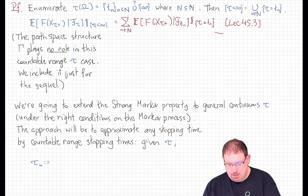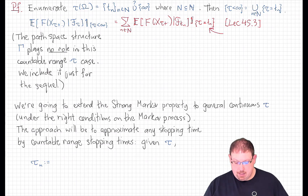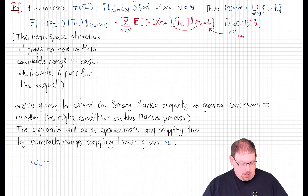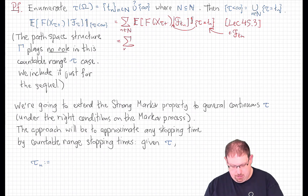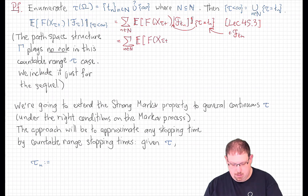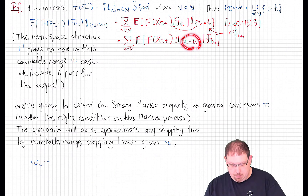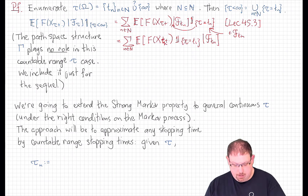Now notice that since tau is a stopping time, the event that tau equals t_n is in F_{t_n}, which means that we can move this indicator function inside the conditional expectation. But once that's inside there, that means that this tau is really just t_n. And now we can go ahead and move this indicator back outside again.